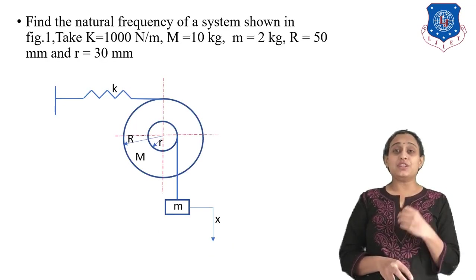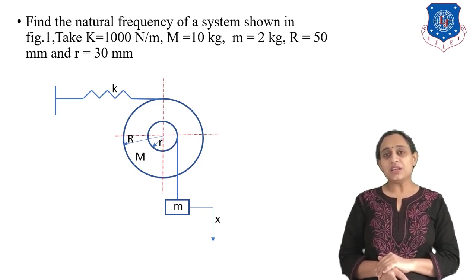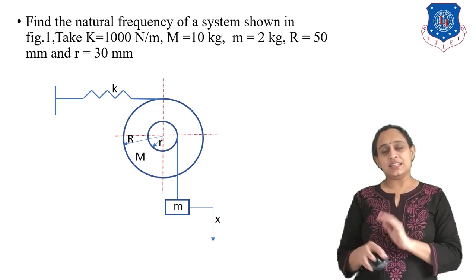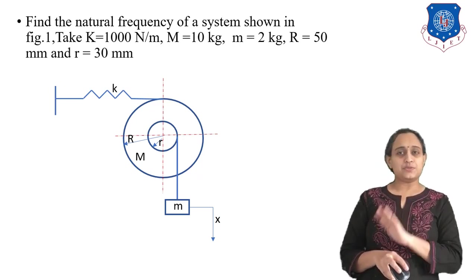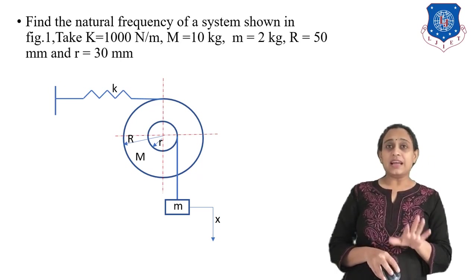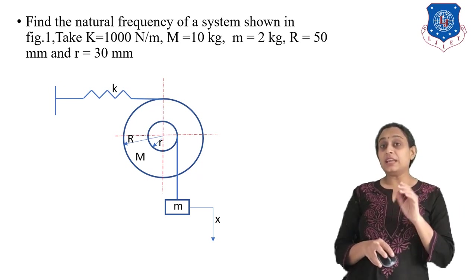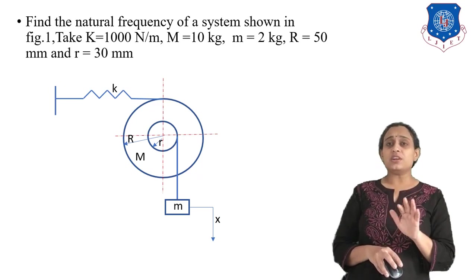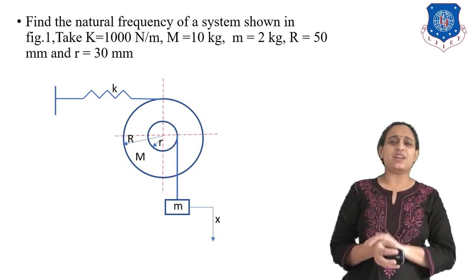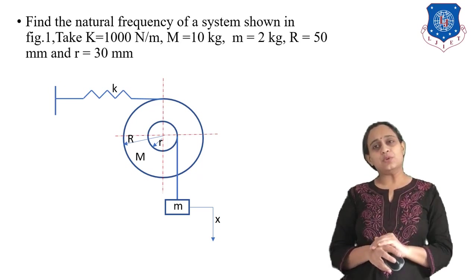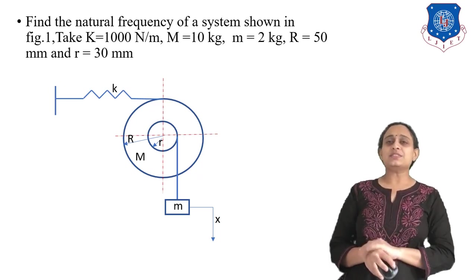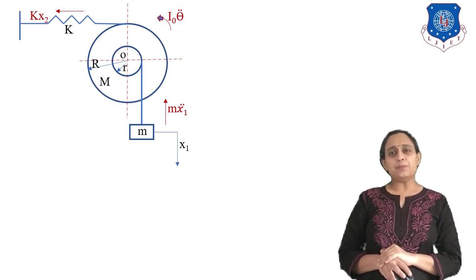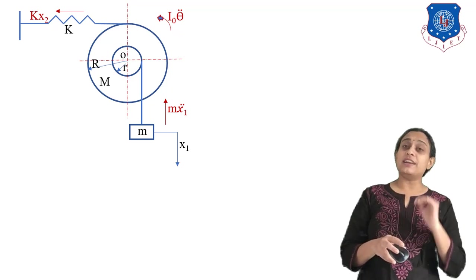Let us now solve another numerical to find the natural frequency, given K = 1000 N/m, capital M = 10 kg, small m = 2 kg, capital R = 50 mm, and small r = 30 mm. In this system, the spring is connected at the outer side of the pulley (radius R) and the mass m is at the inner side (radius r). Since the radii are different, the two displacements are different: X₁ = r·θ for the mass, and X₂ = R·θ for the spring.